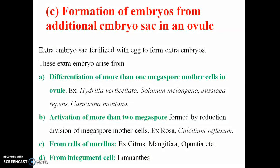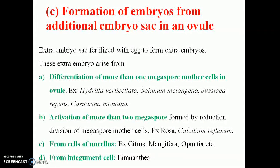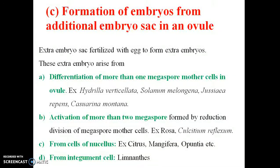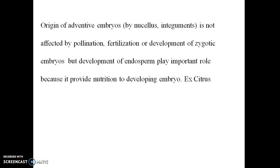In terms of adventitious embryo formation, extra embryo cells in the ovary fertilize to form extra embryos. More than one megaspore mother cell can be present in ovaries — examples are Hydrilla, Solanum, and Cajanus. Activation of more than two megaspore mother cells occurs by reductional division. From cells of the nucellus — examples are Citrus and Mangifera. From integument — example is Lemna. Origin of adventitious embryos is not affected by pollination, fertilization, or development of zygotic embryos, but their development is endosperm-dependent, as endosperm provides nutrition for developing embryos.